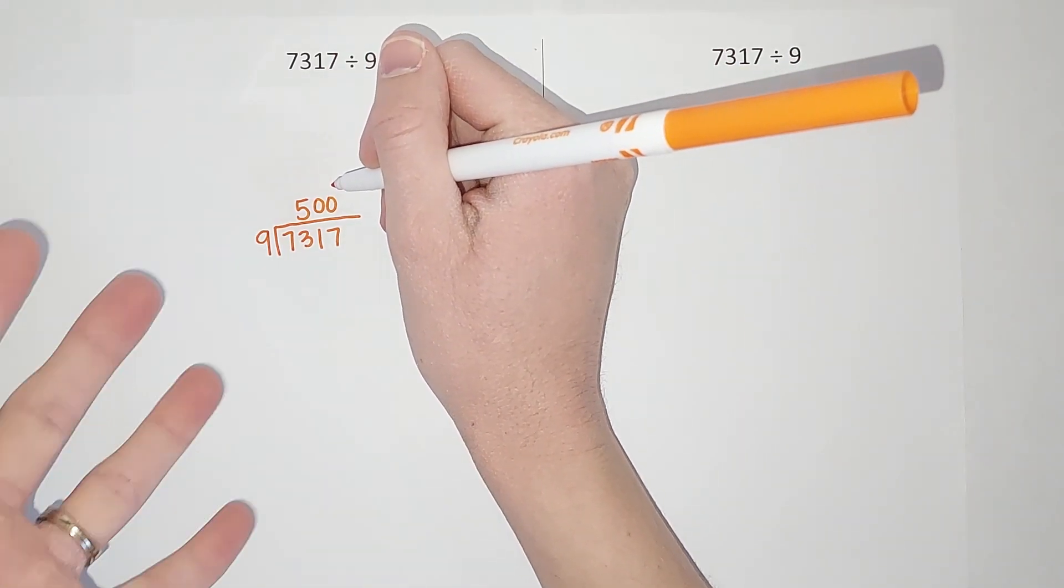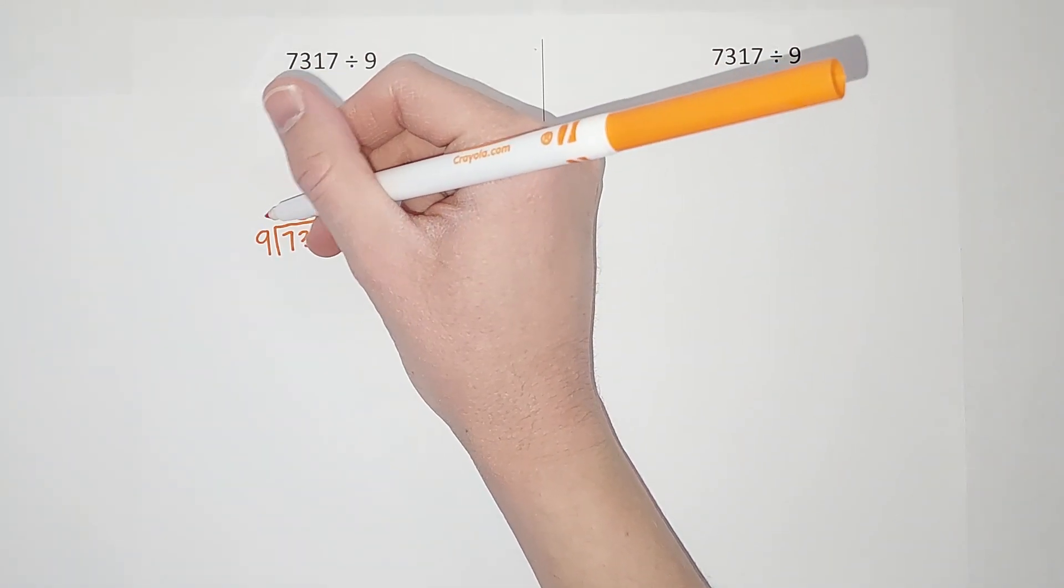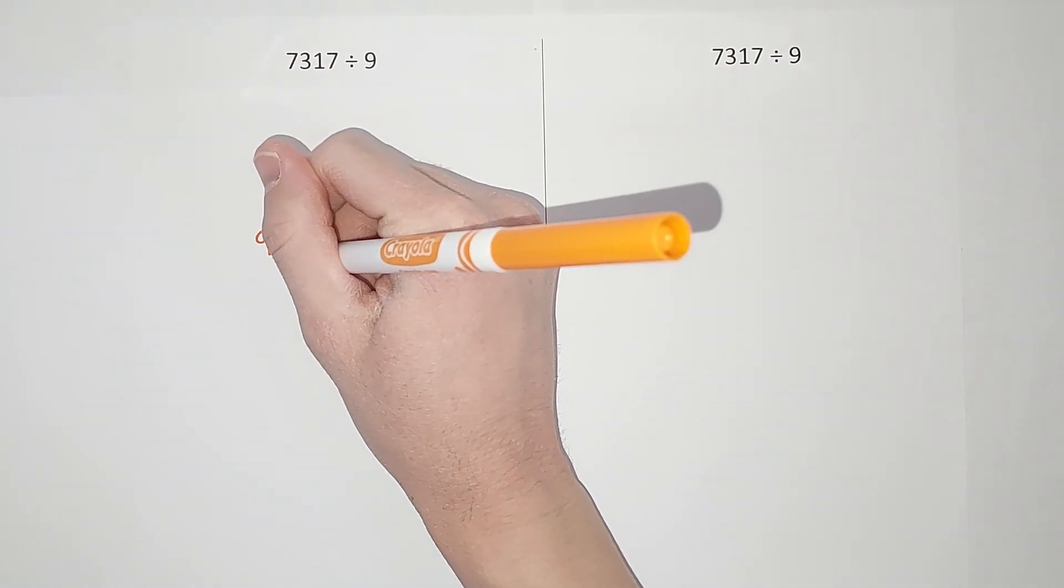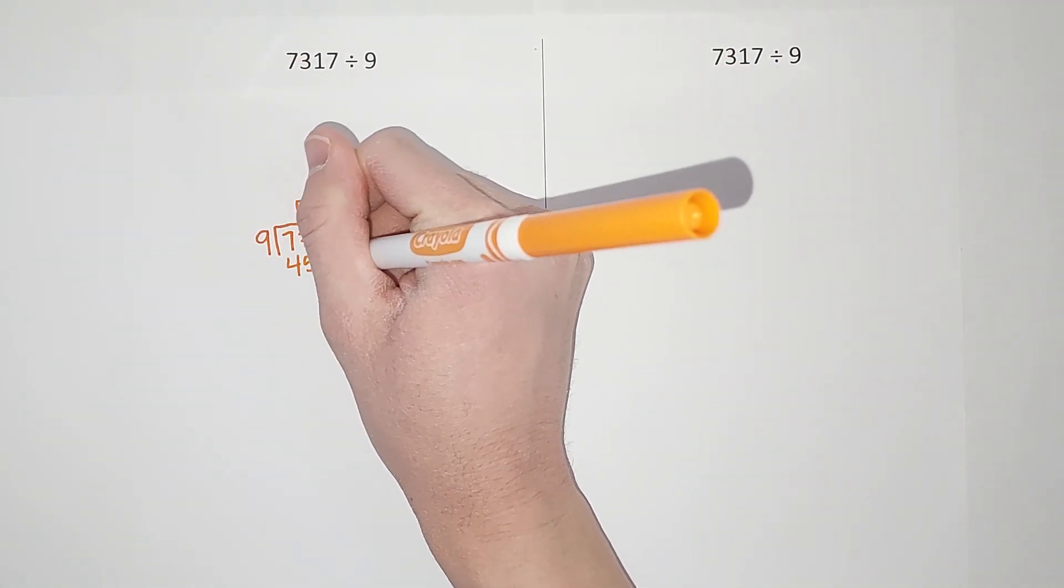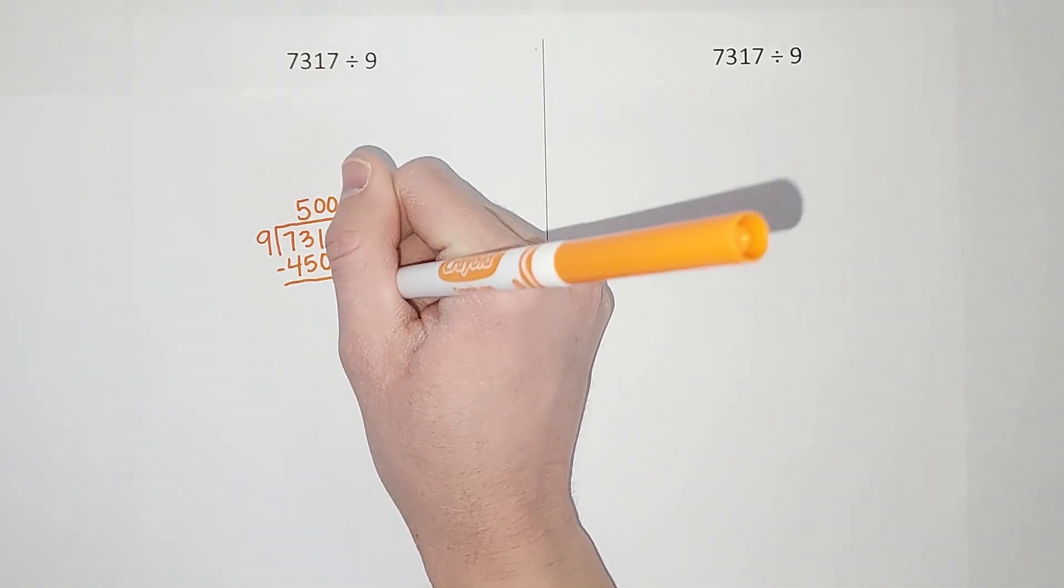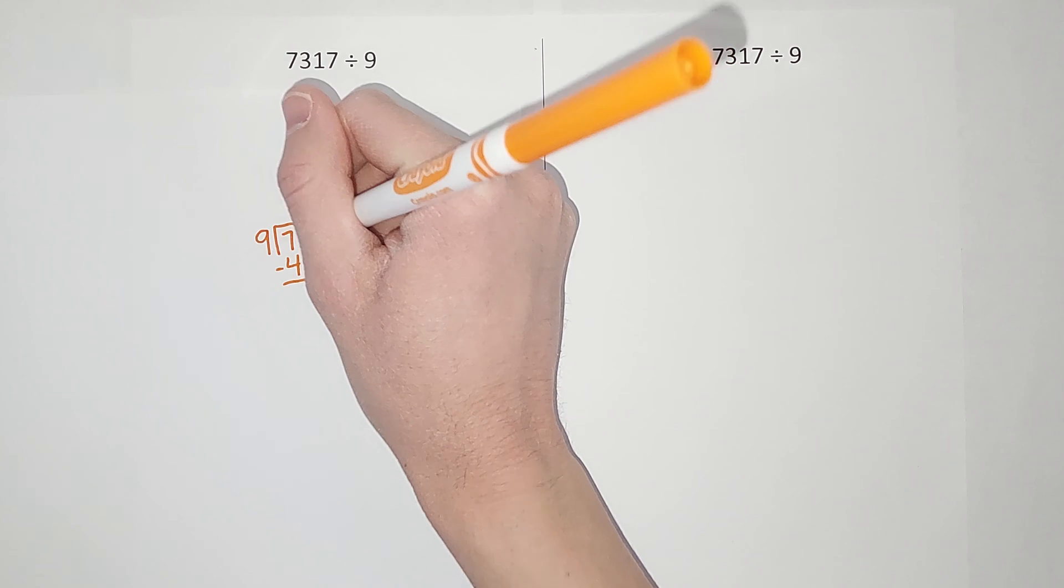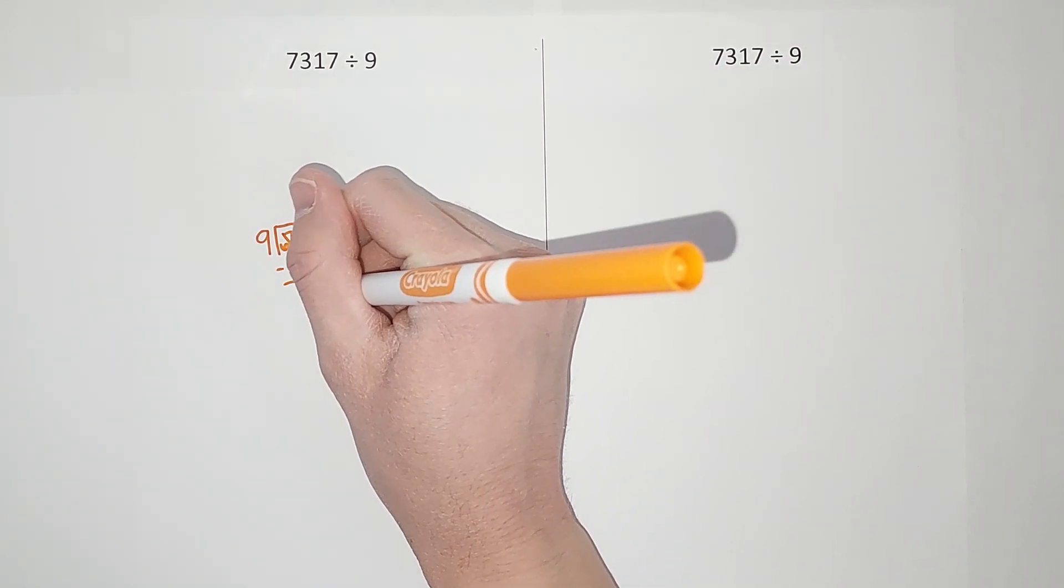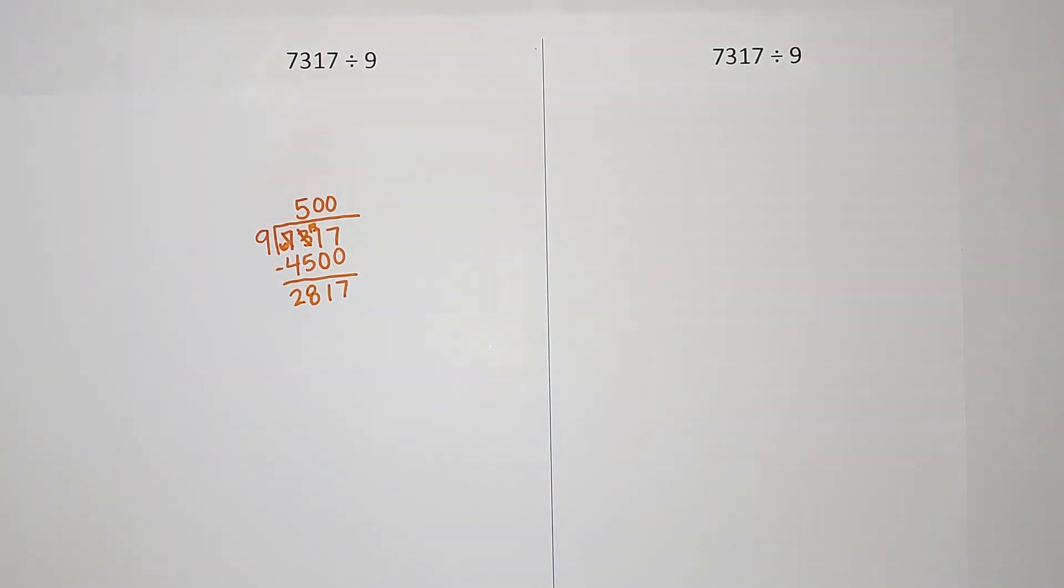And then this is like we're taking 500 groups of 9 out of this big number. So 500 times 9 gives me 4500, and I'm gonna subtract that off and see what's left. When I subtract this I gotta borrow here. I get 8 and 2. So I am left with 2817.